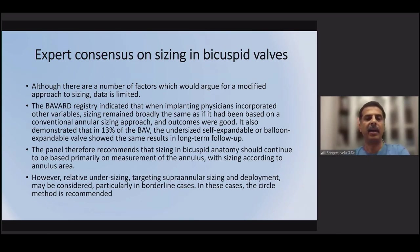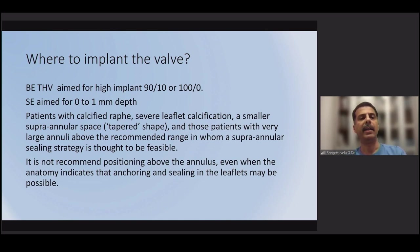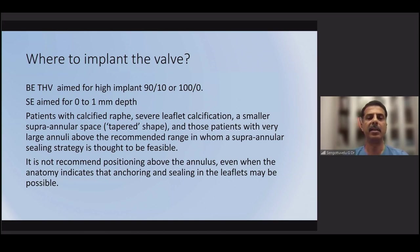Regarding where to implant the valve: in patients with severe calcium and a severely calcified raphe, we try to position the balloon-expandable valve quite high — at a 90/10 or even 100/0 ratio. For self-expanding valves, 0 to 1 mm depth is the target. It is definitely not recommended to position the valve above the annulus. Even when the anatomy would permit supra-annular anchoring, it should be avoided — the depth should be 0 or at the annulus, not above.